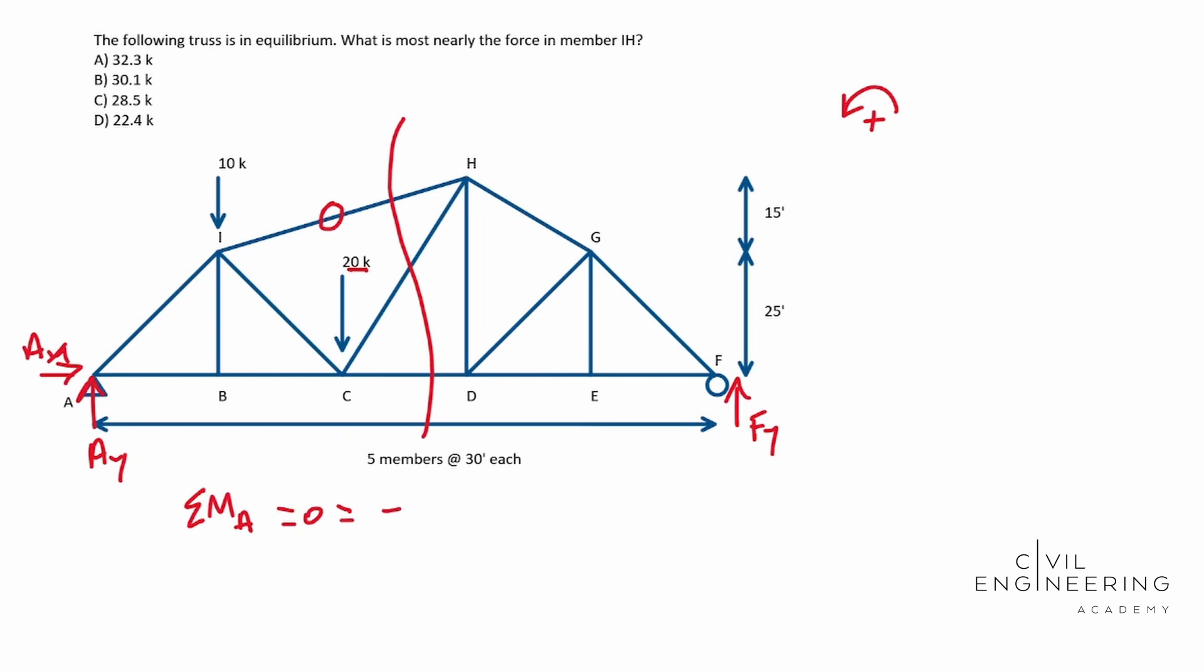So the sum of the moments equals zero. You have a negative moment 30 feet away, so that's 30 feet, times 10 kips is what's acting against that distance. Then we have another negative, and we have 60 feet because it's 30 from A to B, 30 from B to C. We're going to multiply that by 20 kips. Then we have a positive moment 150 feet away, and that is going to be our Fy.